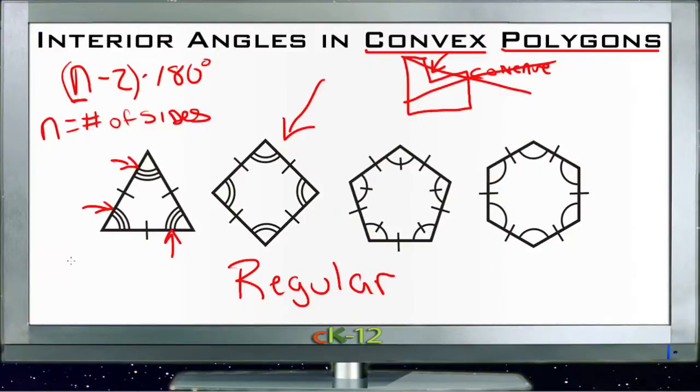If we have a triangle, a triangle of course has three sides, so we'd take three minus two, which of course would give us one, and then we take that one times 180 and we get 180. And a triangle, as we already know, has 180 degrees. So we can see it fits there pretty well.